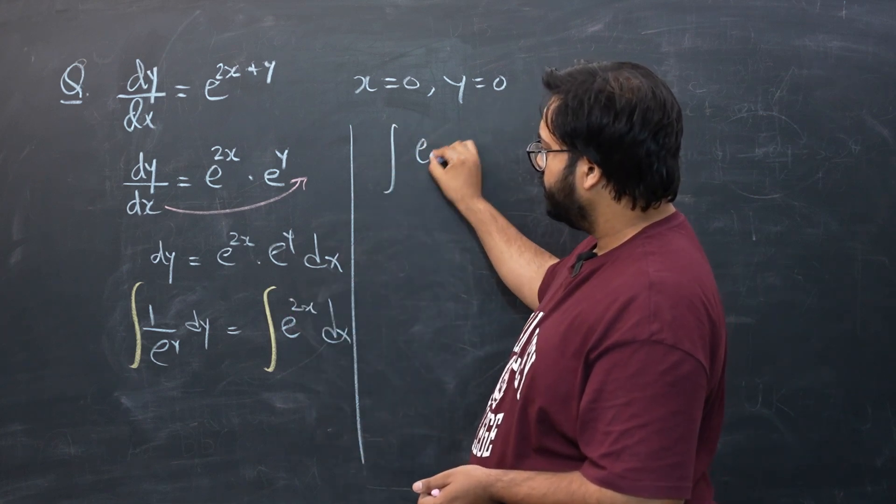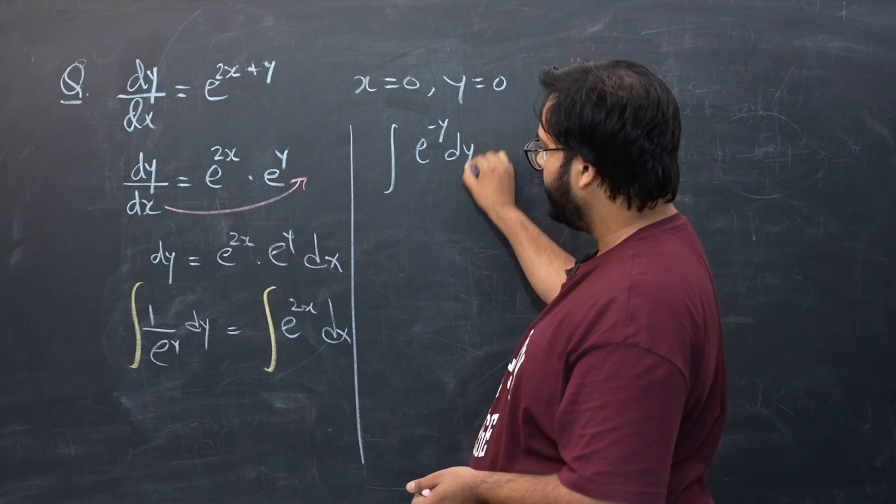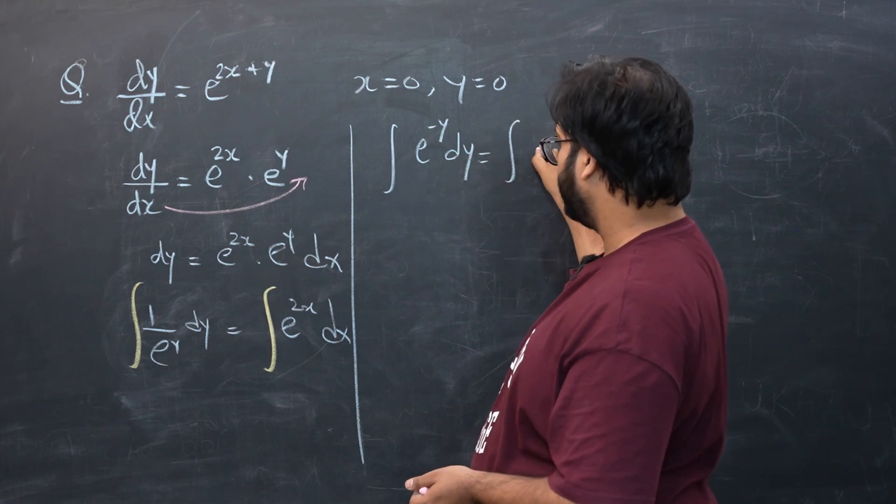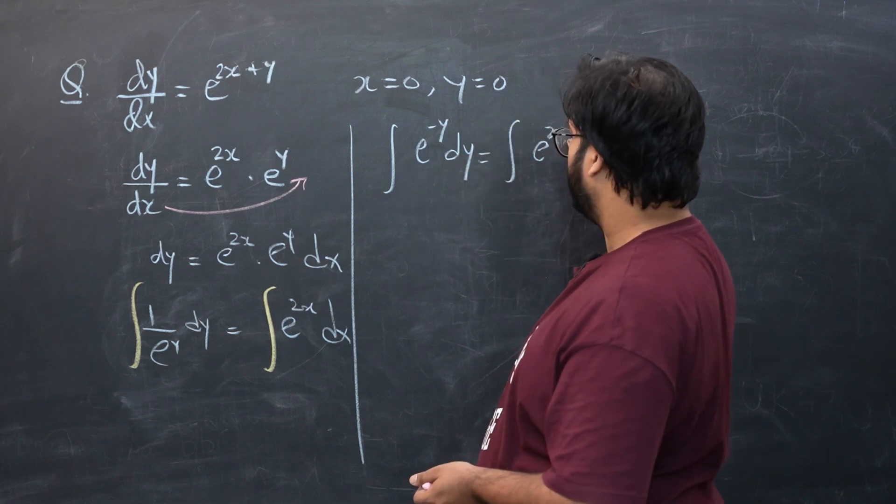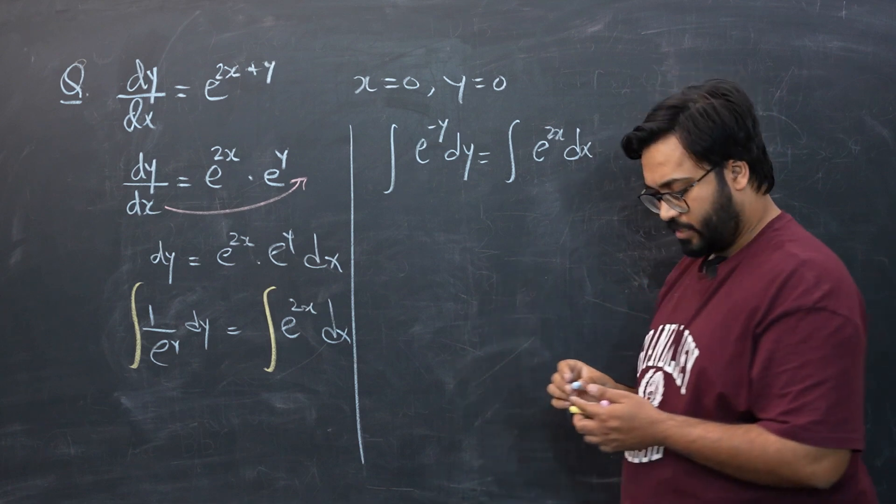Let's bring that e in numerator: e raised to power minus y dy is equals to e raised to power 2x dx.